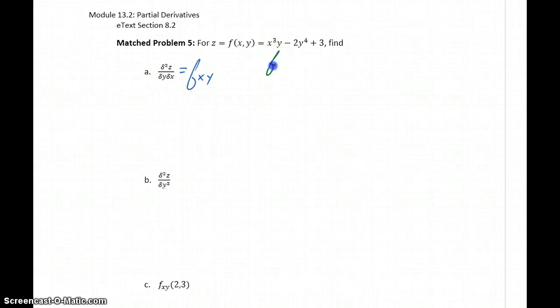So in order to find this, we'll start off by finding f sub x, which in this case will be 3x squared times y. That becomes 0, that becomes 0. So our first derivative is just 3x squared y.